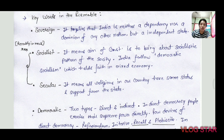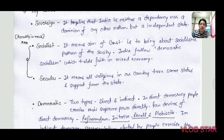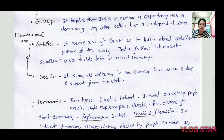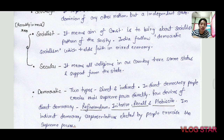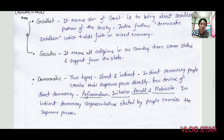Socialist means that the means of production and distribution of resources are controlled by the state. In pure socialism, there is basically no space for private players. However, India does not follow that model — India follows democratic socialism, which is a mixed economy. In a mixed economy, some things are given to the private sector and some things are kept with the government sector.